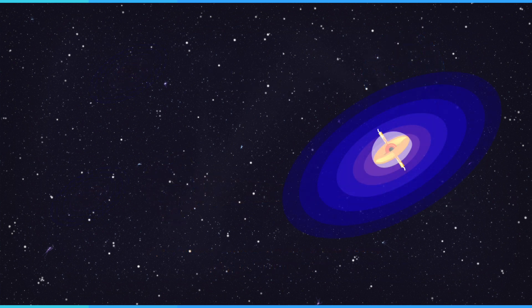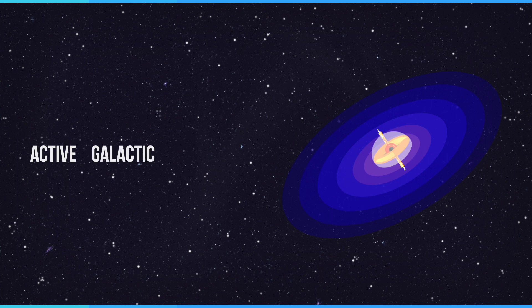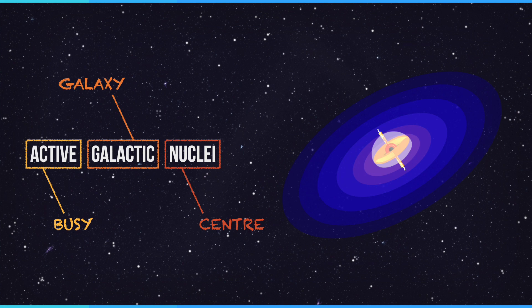So I've been babbling on quite a bit about quasars, but how exactly were they discovered, and what exactly are they, and what do they exactly do? Well, quasars are active galactic nuclei, so therefore they are at the centres of galaxies, and they're very busy.